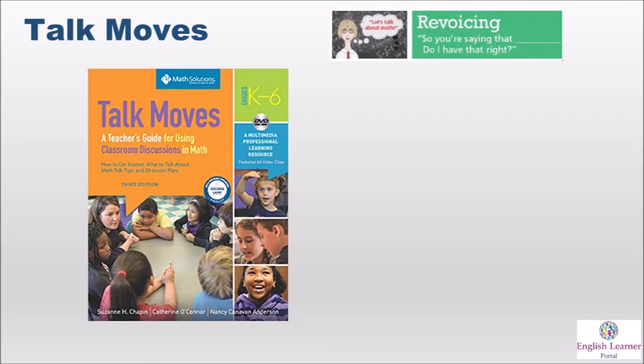Revoicing. When you revoice in class you're going back and forth, and here it says 'So you're saying that blank — do I have that right?' This works really well with English learners because it encourages them to participate. So if you get a response from a student that is accurate mathematically but a little off in the language or grammar or a little hard to understand, you can validate their response but also build language by saying 'Oh so you're saying that — do I have that right? Is that what you mean?' It makes them feel valued in the math, and it helps other students hear the real language done in a correct and grammatical way.